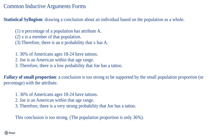Let's look at three common inductive forms and some fallacies associated with each. First, we have the statistical syllogism — drawing a conclusion about an individual based on the population as a whole. The form is: N percent of a population has attribute A; X is a member of that population; therefore there is an N probability that X has A. For example: thirty-six percent of Americans ages 18 to 24 have tattoos; Joe is an American within that age range; therefore there is a low probability that Joe has a tattoo. The fallacy of small proportion is when a conclusion is too strong to be supported by the small population portion — if we tried to argue there is a strong probability Joe has a tattoo, we miss the fact that our sample only accounts for 36% of Joe's demographic.